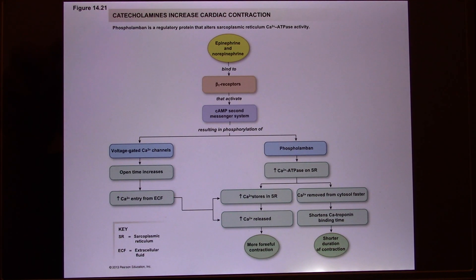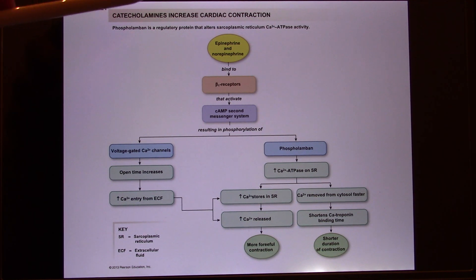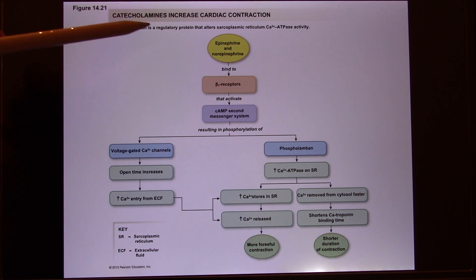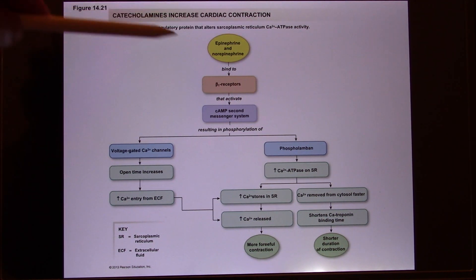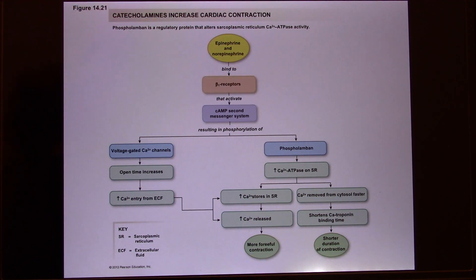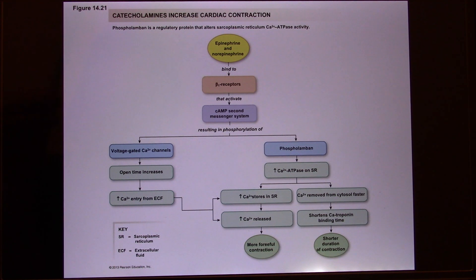These slides tell us how the sympathetic nervous system, at the molecular level, is able to increase heart contractility. The sympathetic nervous system uses epinephrine. In the heart, epinephrine binds with the beta-1 receptor. Those adrenergic receptors trigger the second messenger, and the second messenger is cyclic AMP.